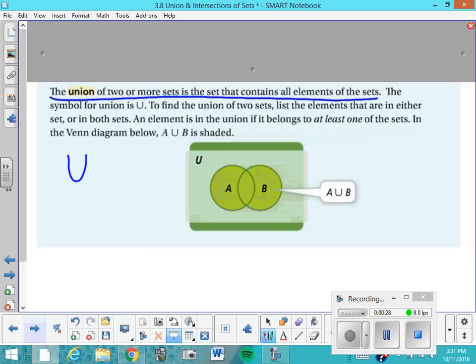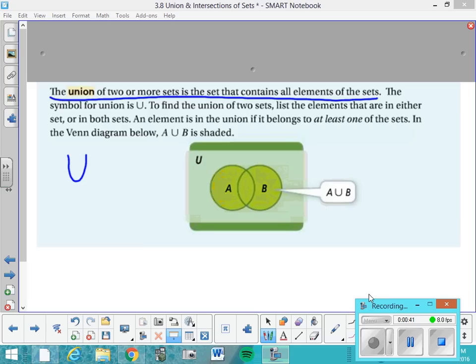To find the union of the sets, you basically list the elements that are in either set or in both sets, and an element is in the union if it belongs to at least one of the sets. In the Venn diagram below, you may not be able to recognize, but actually the whole thing is shaded in to represent that anything that's in set A is in the union, anything that's in set B is in the union, and anything that's in both is also in the union. So you can see that everything there has been shaded to represent set A union set B.